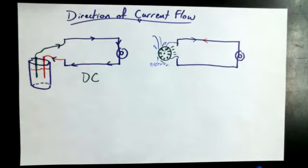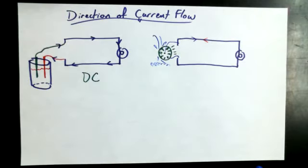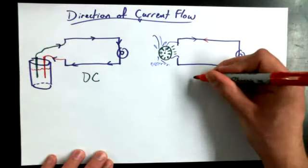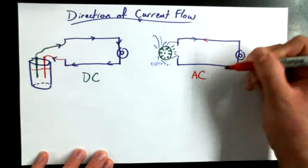But at the end of the day, the electrons are zipping back and forth in the wires. And we call this, anybody know what it's called? Alternating current. Alternating current. Or for short, AC.